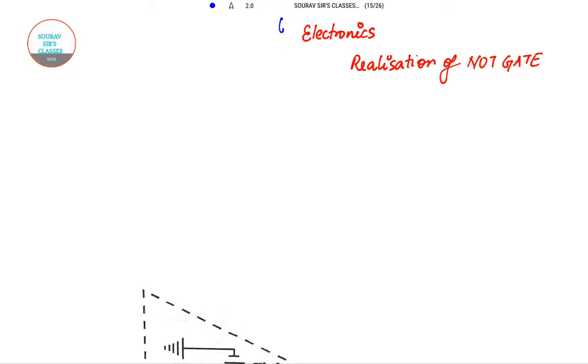Today's tutorial will be on electronics. We will continue our discussion with regard to different circuits. Today we will be doing realization of NOT gate. We have already covered AND and OR gate, so let us begin.